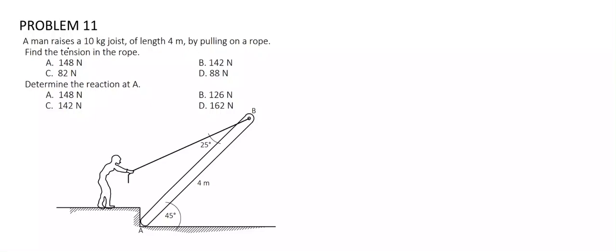For this problem, a man raises a 10 kg object of length 4 m by pulling on a rope, and we are tasked to determine the tension of the rope and the reaction at A. Now, this object is acted upon by three forces: its weight acting upon the centroid W, the force T exerted by the rope, and the reaction R.